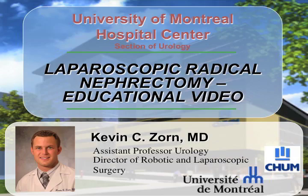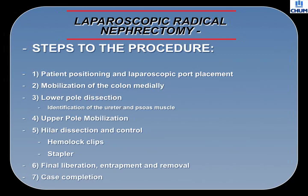In short, there are generally seven steps to this procedure. The first is patient positioning and laparoscopic port placement. Since the instruments are fixed around this pivot point, it is important that they are properly placed. Second is mobilization of the colon medially. Third is the lower pole transection and identification of the ureter and posterior psoas muscle. The fourth aspect is upper pole mobilization. The fifth, and most crucial and delicate, is the hilar dissection and control of the vascular pedicle. The final aspects are the final liberation, the entrapment, and finally case completion and skin closure.